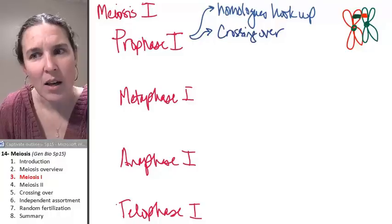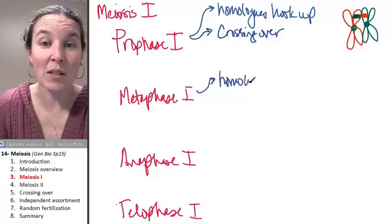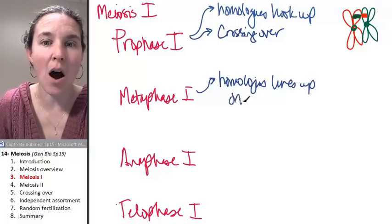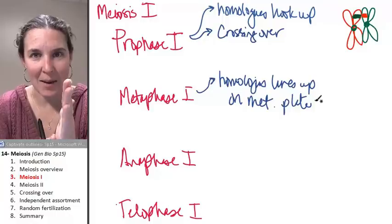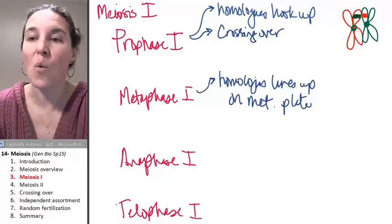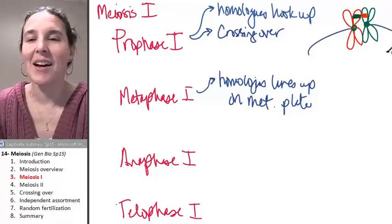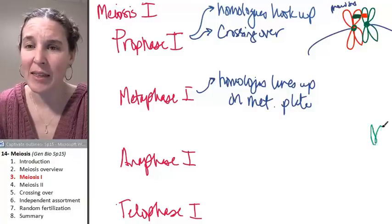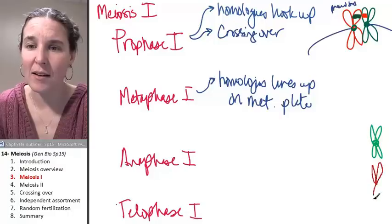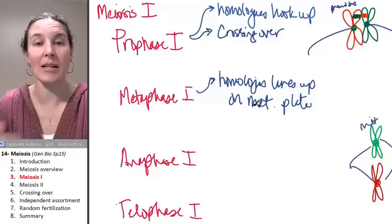In metaphase I, it's the homologues that line up on the metaphase plate. My sisters lined up last time, but now my homologues are going to line up together. In mitosis they lined up in a line like this, but in meiosis my homologues are lined up on the metaphase plate.